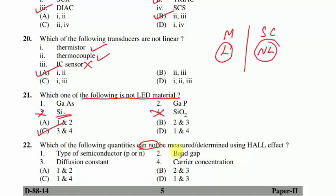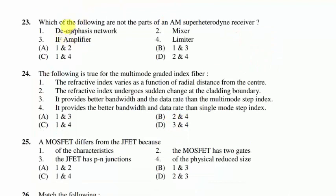Question 22: which quantity cannot be measured with the Hall effect? The Hall effect is used to find the type of semiconductor and carrier concentration. Since the question asks what CANNOT be measured, option B follows. Hall voltage is negative for N-type, positive for P-type, and approximately zero (and negative) for metals.